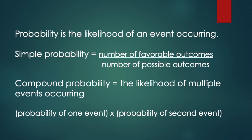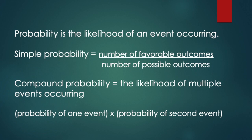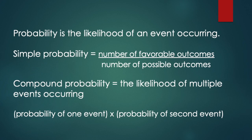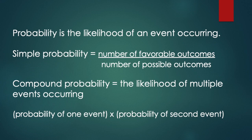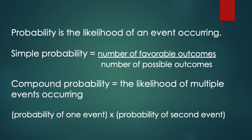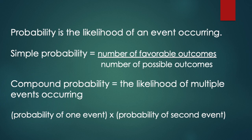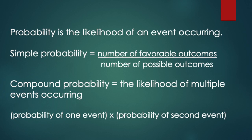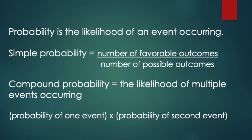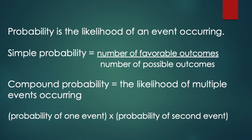In this next section, I want to make sure we cover a couple of definitions and notes before we dive into probability. Probability is the likelihood of an event occurring — for example, what's the probability of it raining today, or getting a royal flush in poker. Simple probability is just the number of favorable outcomes over the number of possible outcomes.